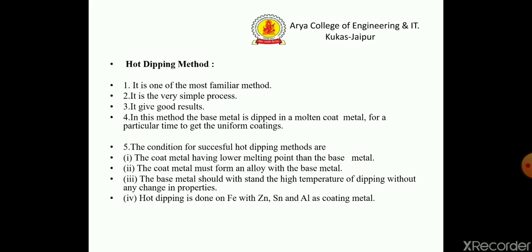The next method to control corrosion is the hot dipping method. It is one of the most familiar methods — it is a very simple process and gives good results. In this method, the base metal is dipped in a molten coat metal for a particular time to get a uniform coating. Conditions for successful hot dipping: the coat metal must have a lower melting point than the base metal; the coat metal must form an alloy with the base metal; the base metal should withstand the high temperature of dipping without any change in properties; and hot dipping is done on iron with zinc, tin, and aluminium as coating metals.